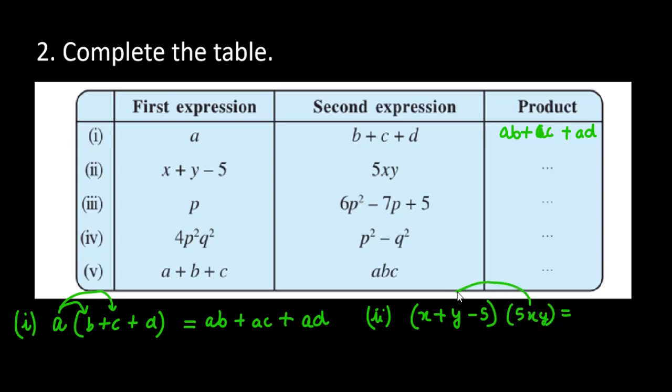5XY को आप X के साथ multiply करोगे तो आपका 5X square Y बन जाएगा. 5XY को Y के साथ multiply करोगे, it will be 5XY square और 5XY को 5 के साथ multiply करोगे, it will be minus 25XY. और यह दियान रखना कि यहाँ पर minus है, 1 minus और 1 plus, it will be minus.